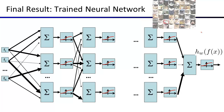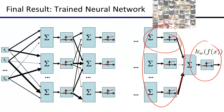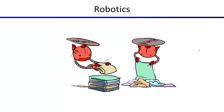Once you have features like that, classification becomes much easier. If you have a feature that effectively recognizes a cat face, all you need in the classification stage is to give that feature high weight when detecting a cat face. You get a really good feature representation, and then classification becomes a lot easier. Let's take a break here, and after the break, let's look at robotics.